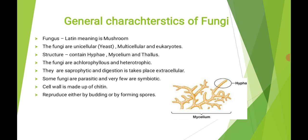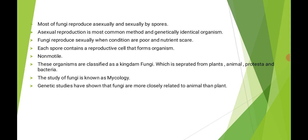Budding is a type of asexual reproduction. Reproduction in fungi occurs either by budding or by spore formation. Most fungi reproduce asexually and sexually by spores. Fungi mostly reproduce asexually, but sometimes they reproduce sexually by spores. Spores are present in the fungi.